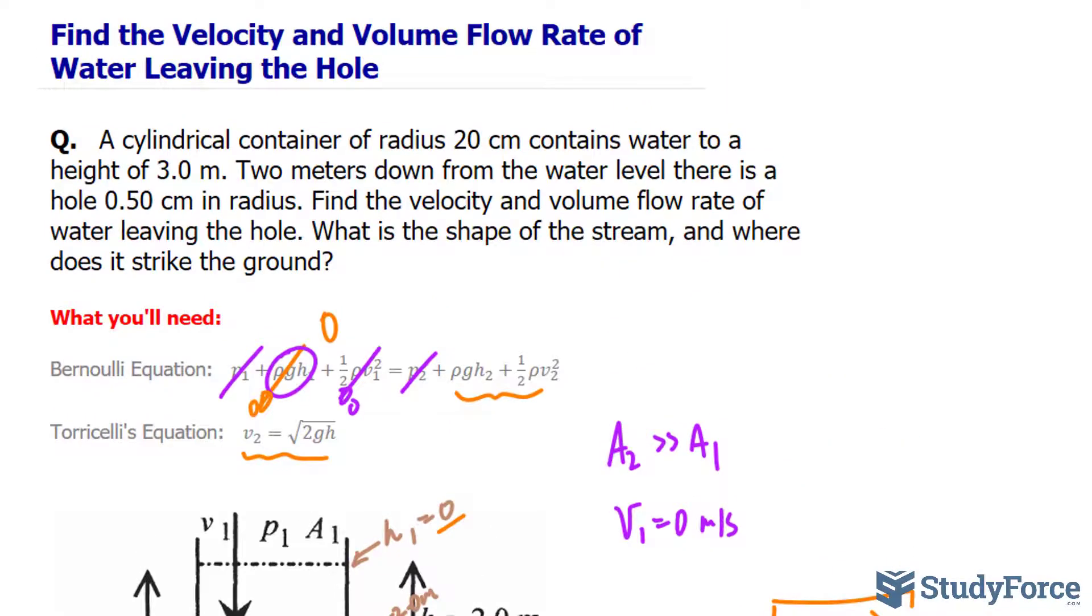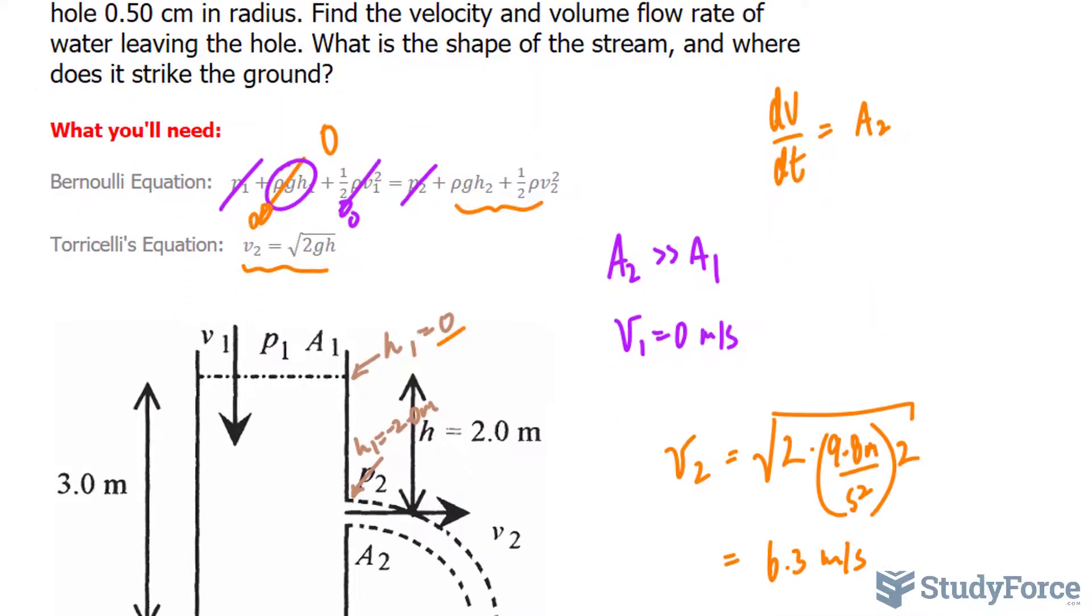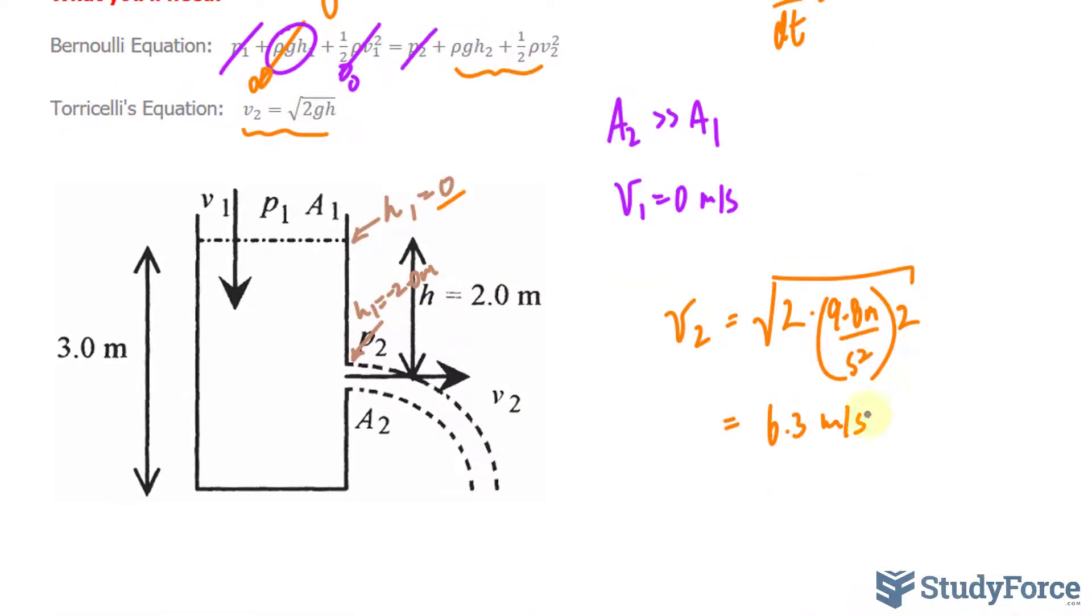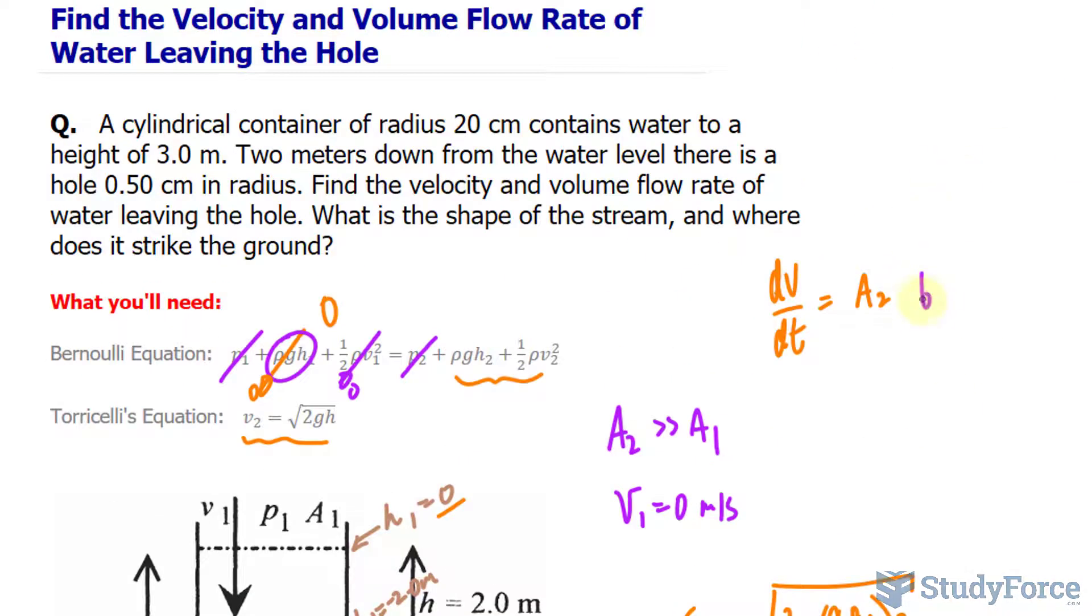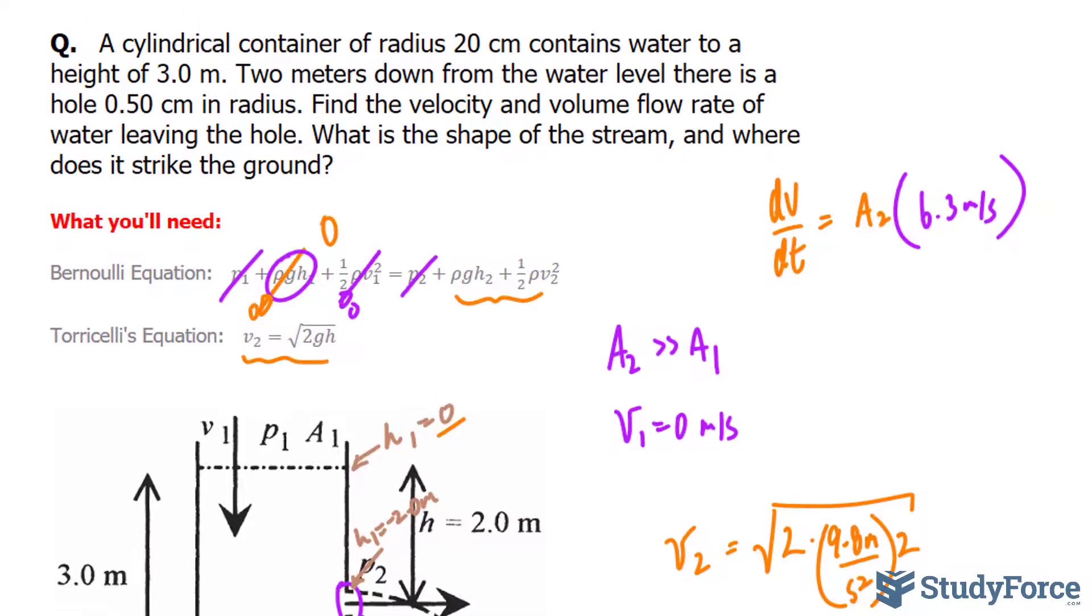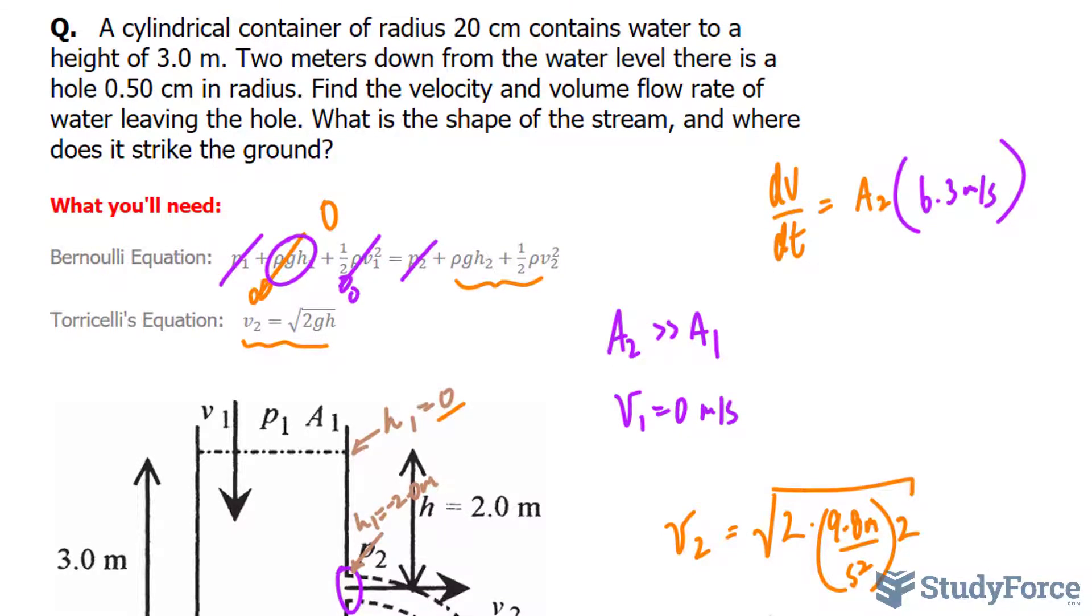Now we're looking for the volume flow rate. The formula for that is the area at which the water escapes the tank times the velocity, which we found, 6.3 meters per second. Therefore, we have to find the area of the hole.